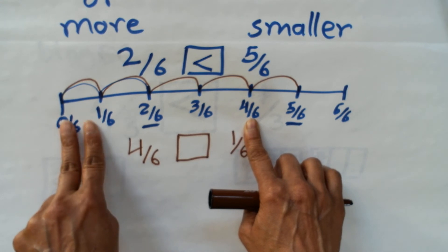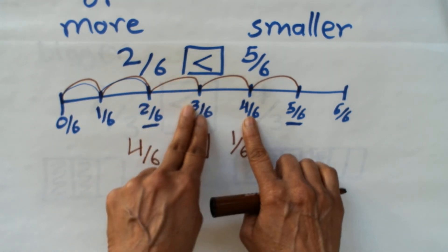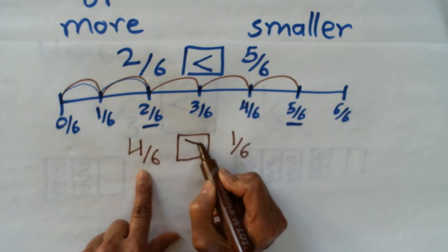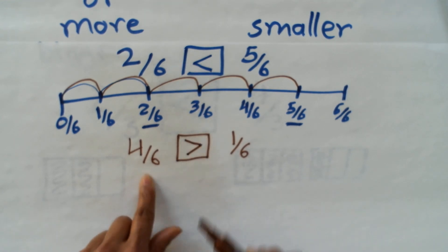1/6 is 1 jump from 0, and 4/6 is 4 jumps. So 4/6 is greater than 1/6.